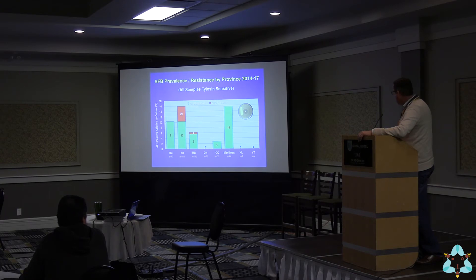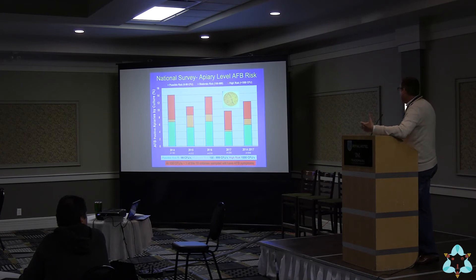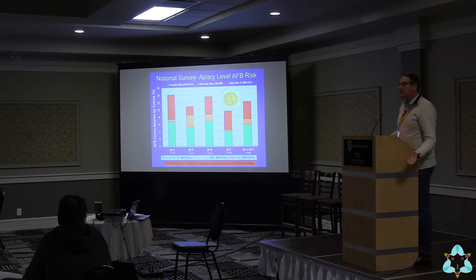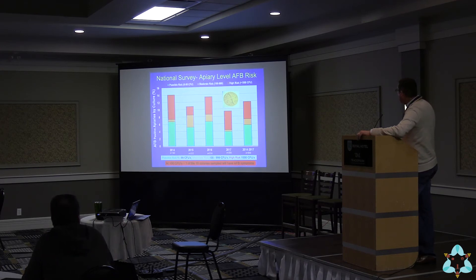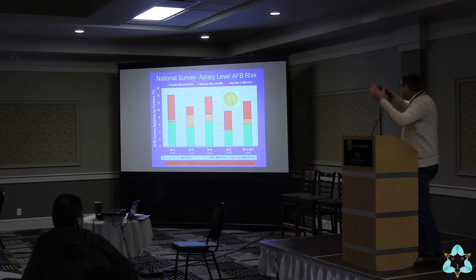We also developed a risk rating index from these bee samples. Based on an apiary-level sample of 10 colonies from the national survey, we divide samples into categories of risk depending on the numbers of spores cultivated. Looking at the average over the four years of the survey, we can see how many beekeepers had low, medium, or high risk of AFB. That may show the applicability of culturing AFB from bee samples or honey samples as a risk model for area-wide surveillance.